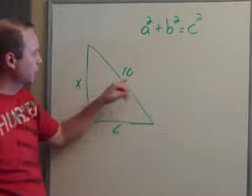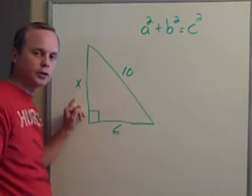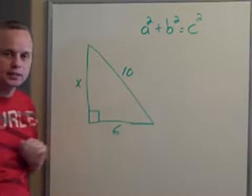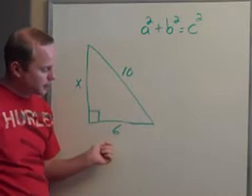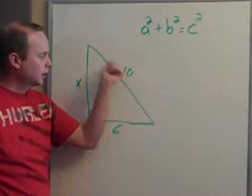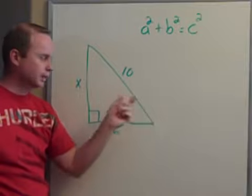And it helps us find a missing side of a triangle. We don't know the length of x in this case. We know that the base on this one is 6 and we know that the length on this one here is 10.